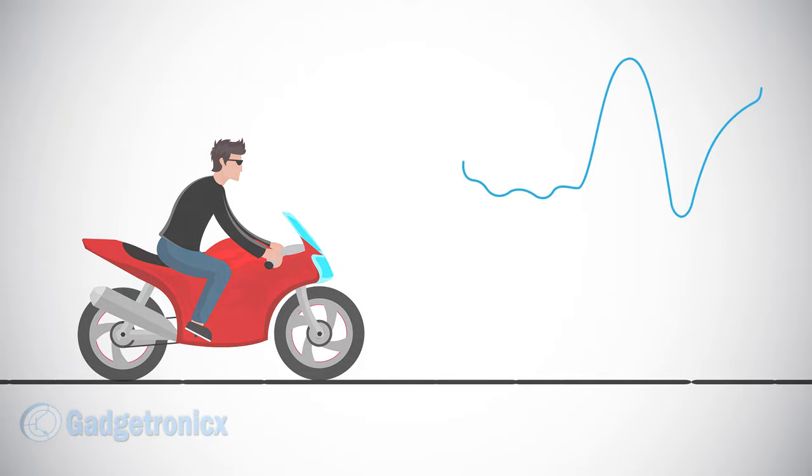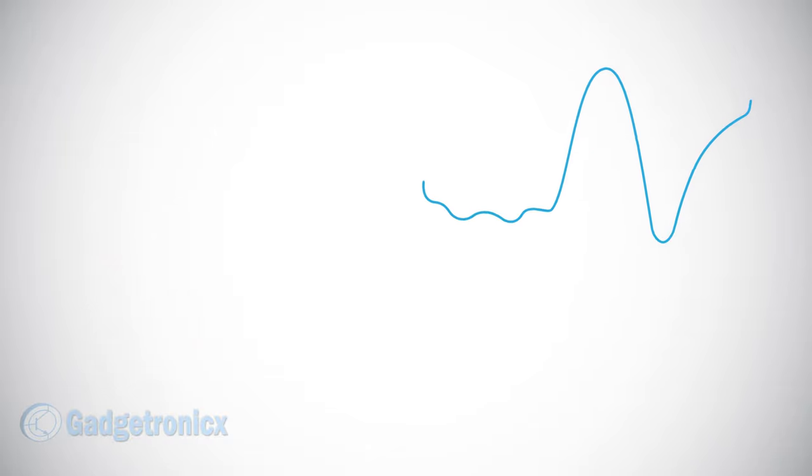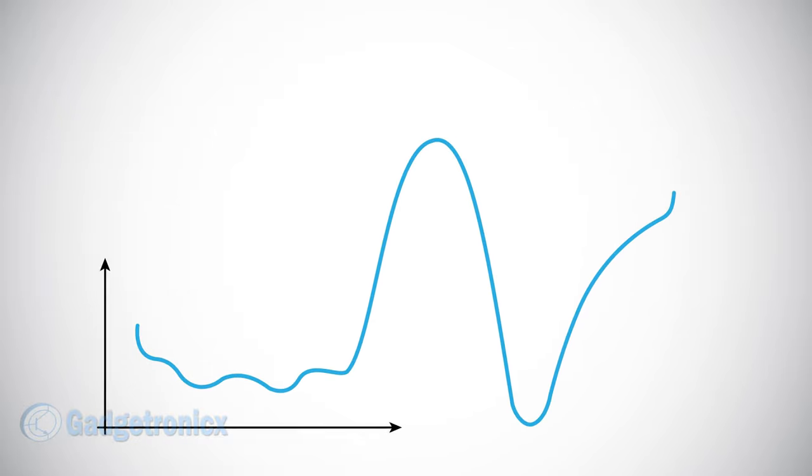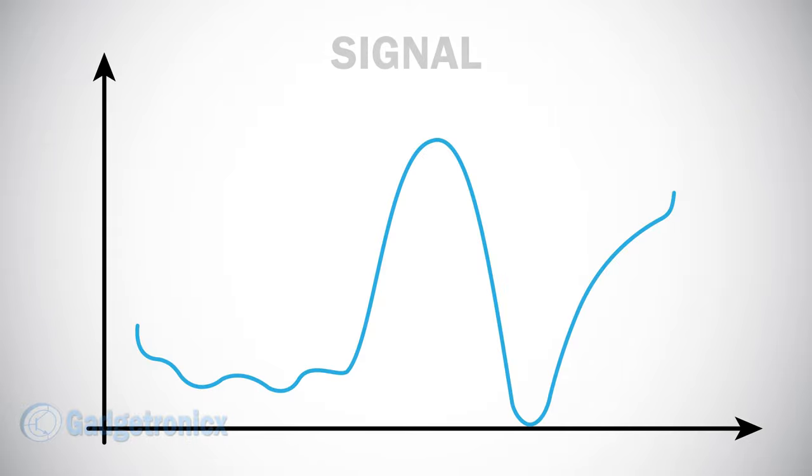Here speed is a physical quantity and when we plot Dave's speed against time, we will get a signal. This is why we define signal as a physical quantity that varies with time.